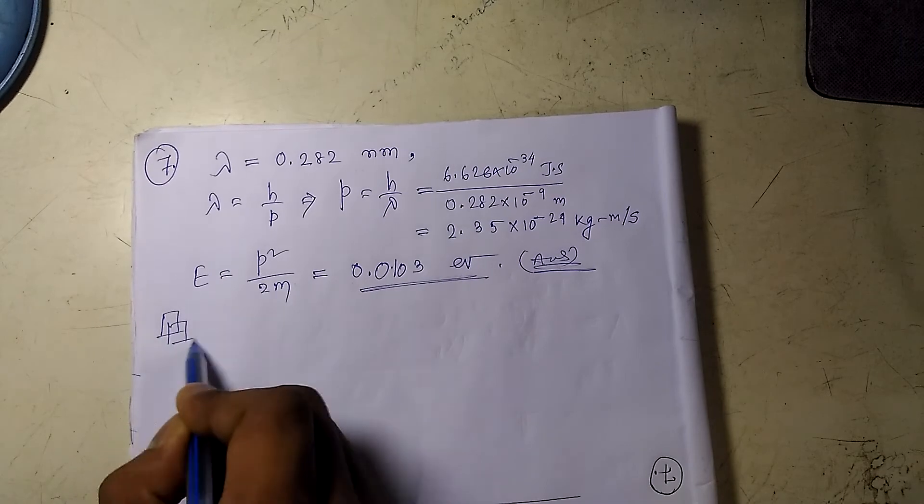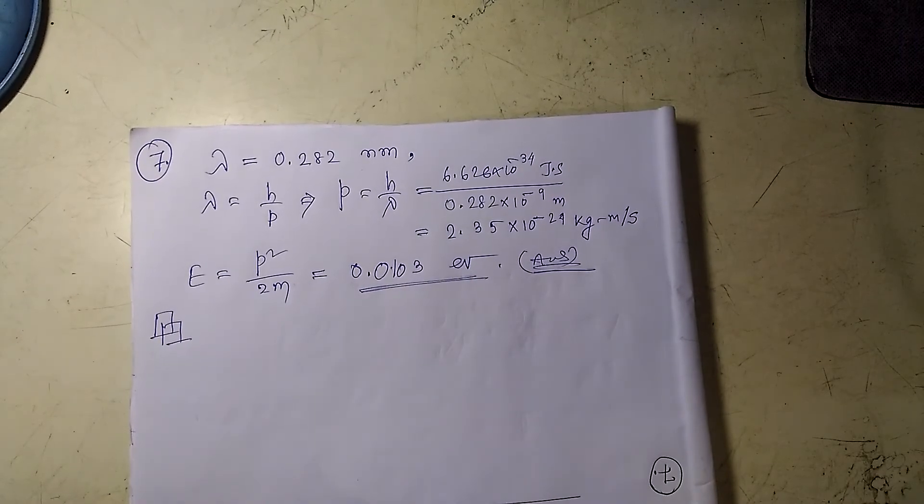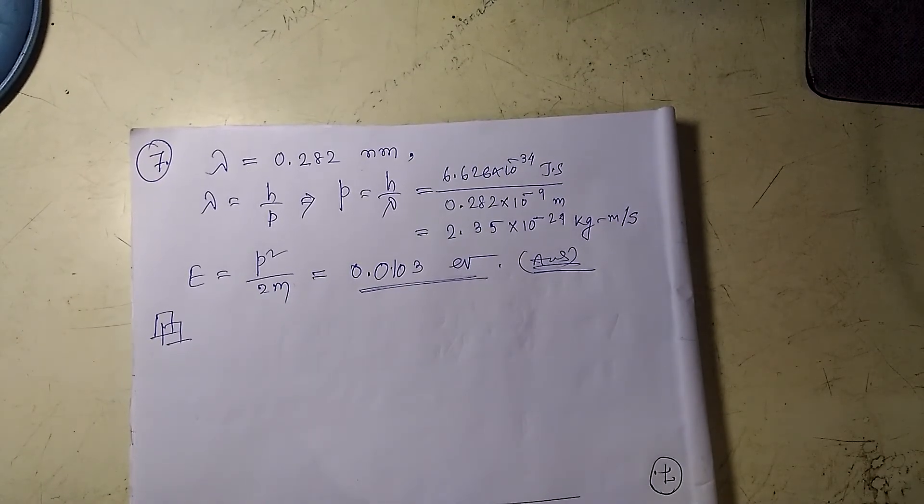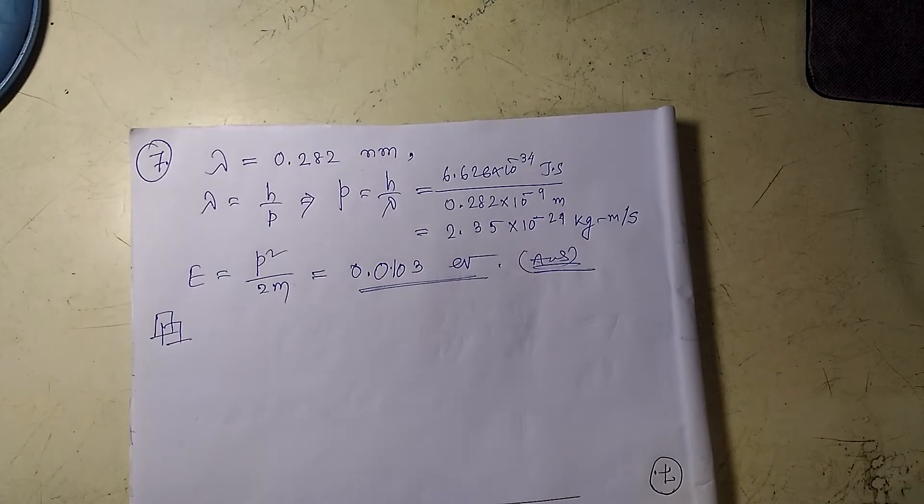Now the second part says that, is a relativistic calculation needed? Such neutrons can be used to study crystal structure. Now what we have to do right now.